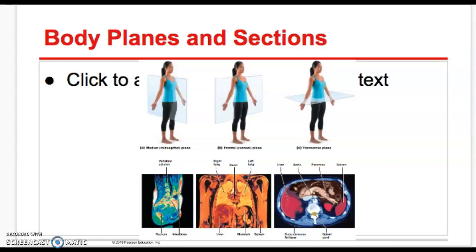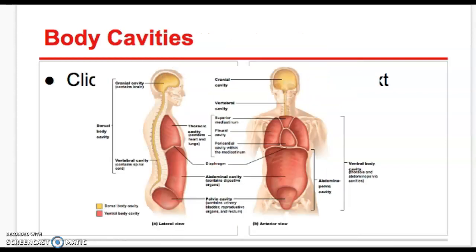The last thing that we're going to talk about for this are the body cavities in the abdominal regions. So we have the dorsal body cavity and the ventral body cavities. So the dorsal body cavity is in yellow and it's broken into the cranial cavity and the vertebral cavity.